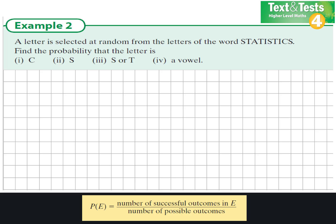Example 2. A letter is selected at random from the letters of the word STATISTICS. Find the probability firstly that the letter is a C.